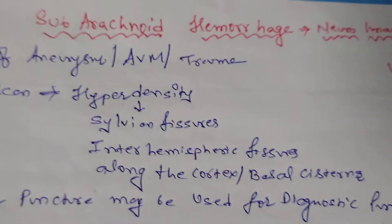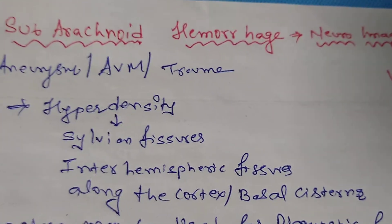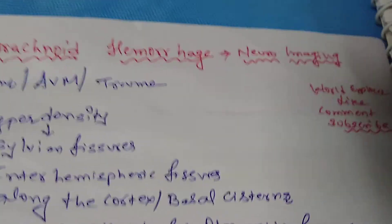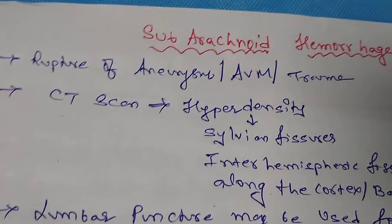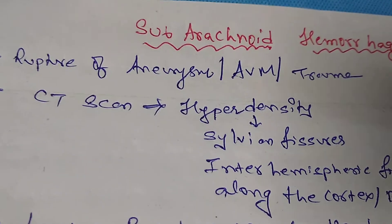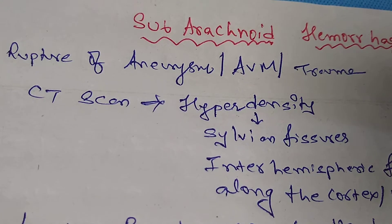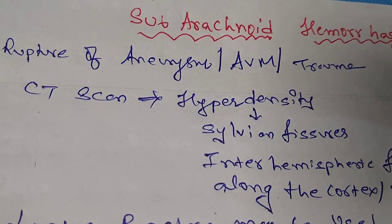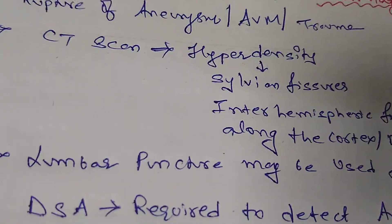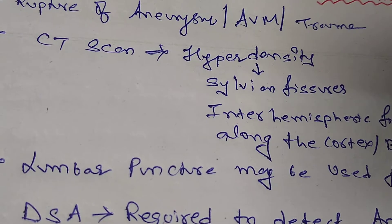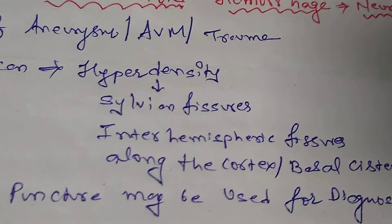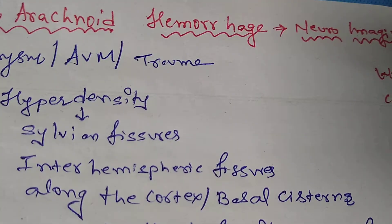Today's topic is subarachnoid hemorrhage and neuroimaging considerations. Subarachnoid hemorrhage happens because of rupture of an aneurysm, arteriovenous malformation, or trauma. On CT scan, we can see hyperdensity in the sylvian fissures, interhemispheric fissures, and along the cortex or basal cisterns.